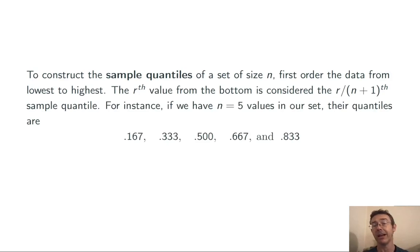For instance, if n equals 5, then the values in the data set when ordered from low to high are the 1/6, 2/6, 3/6, 4/6, and 5/6 quantiles.